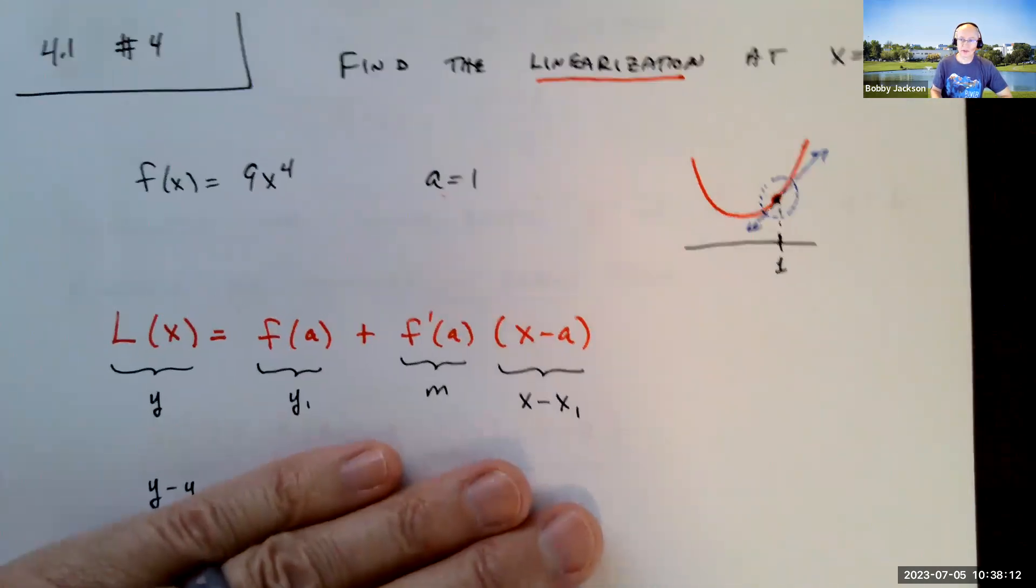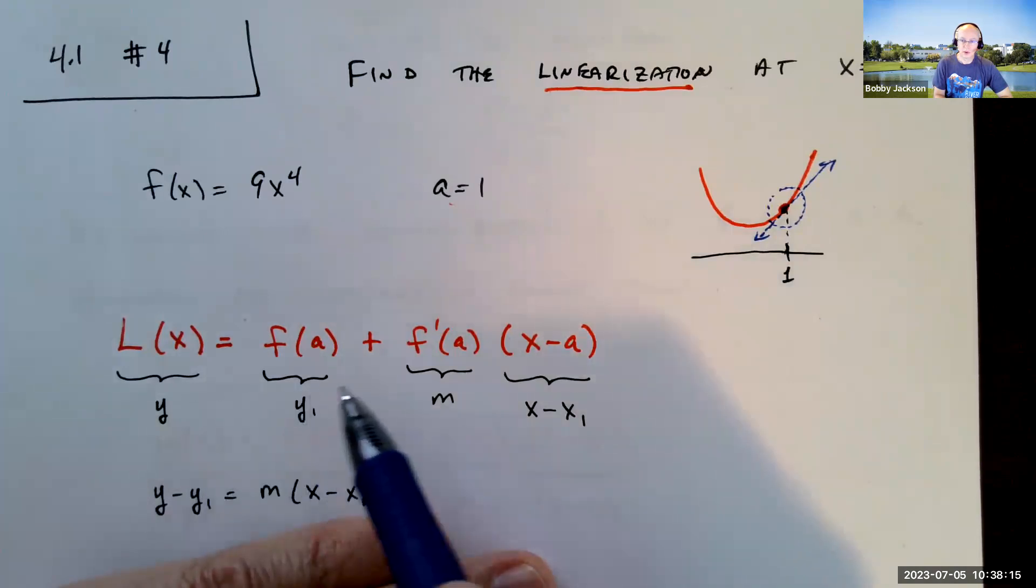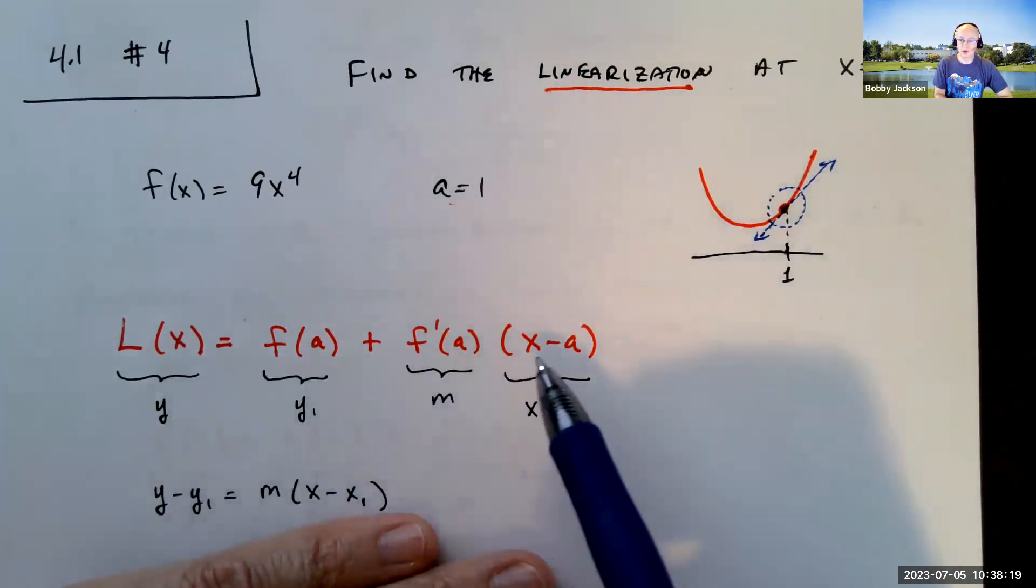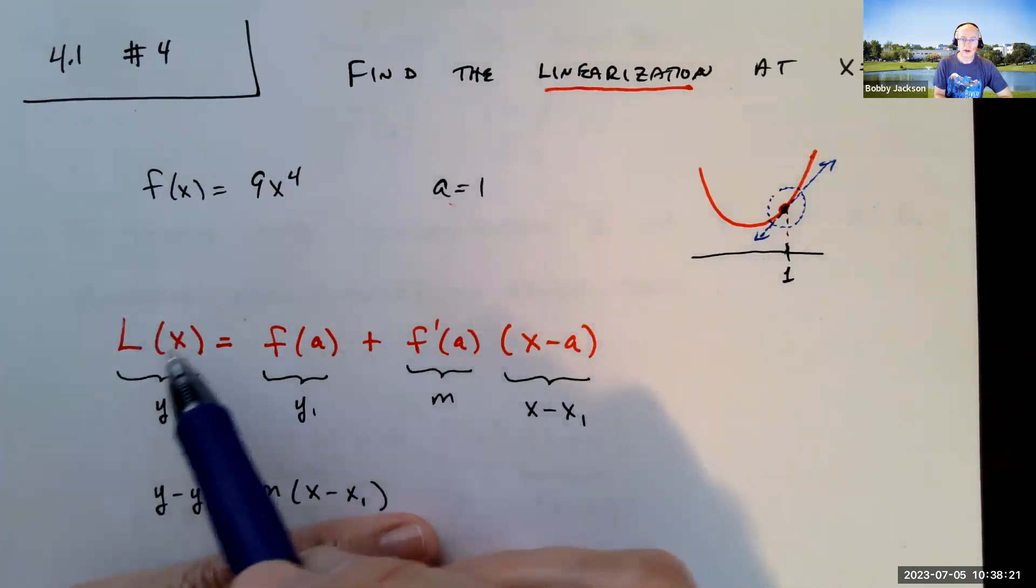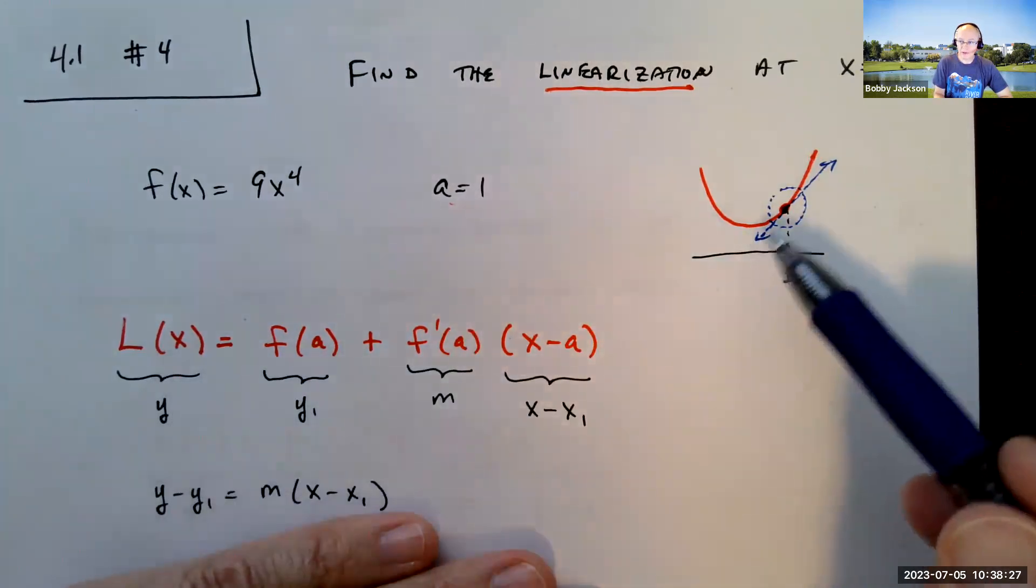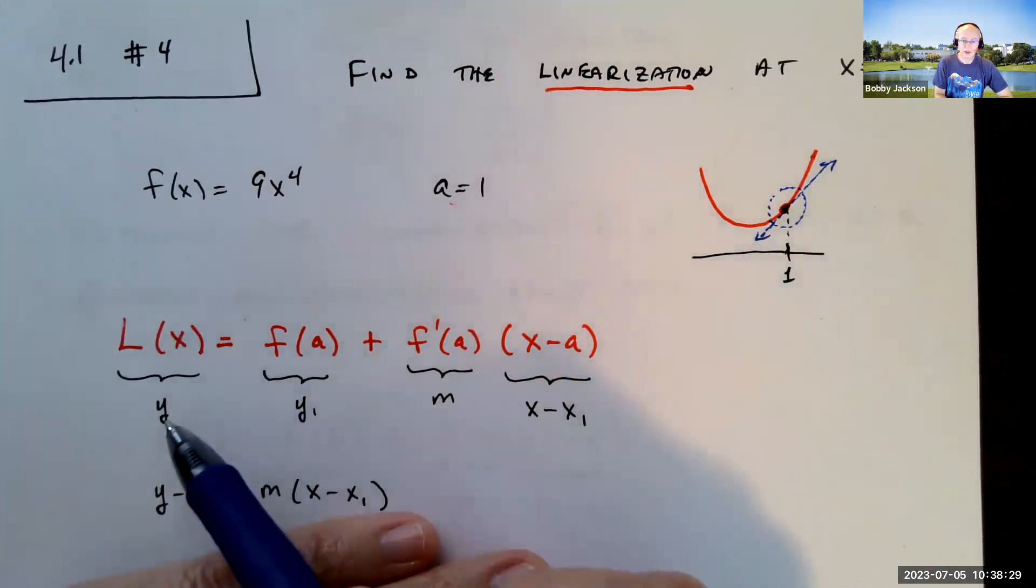Now, they give you a formula in the book, and I talked about really what we have here is just the equation of the tangent line. So here's the formula. You could use the L of x means the linearization for the function as a function of x, but it's really just the y value. It's just the graph of this line. So that L of x is just y.